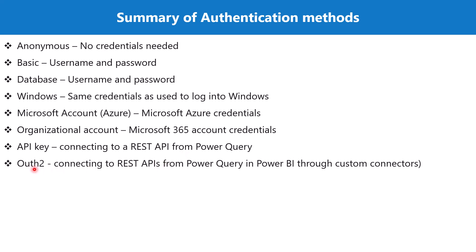Another authentication method is OAuth2, which is similar to the API key method. When connecting to REST APIs from Power Query inside the Power BI environment through custom connectors, this authentication method is used. All of these authentication methods are available for different data sources inside the Power Query environment, and you should be familiar with all of them, as some PL300 exam questions can cover authentication methods associated with data sources.